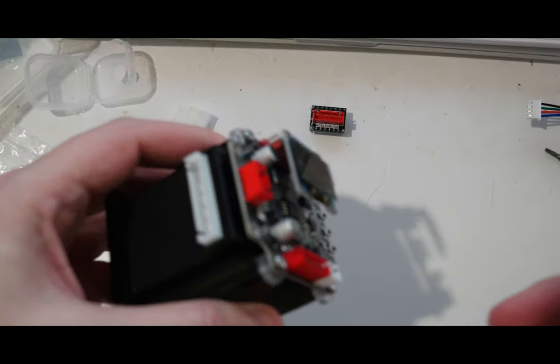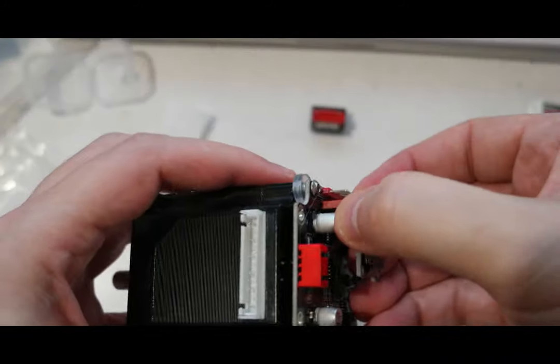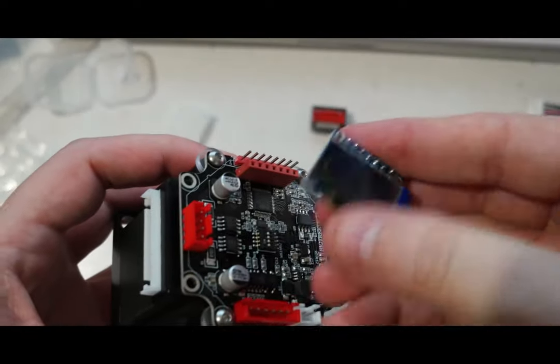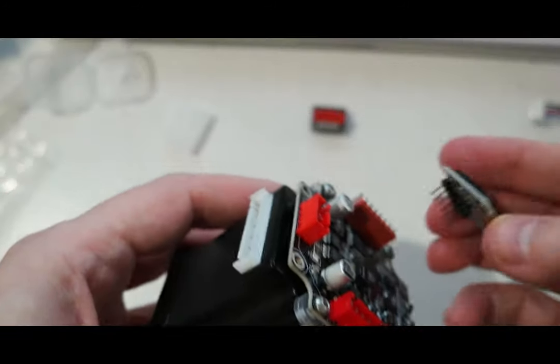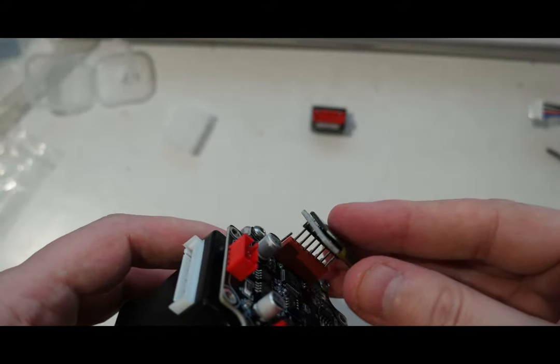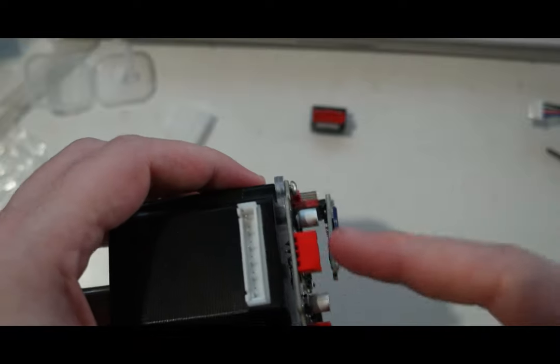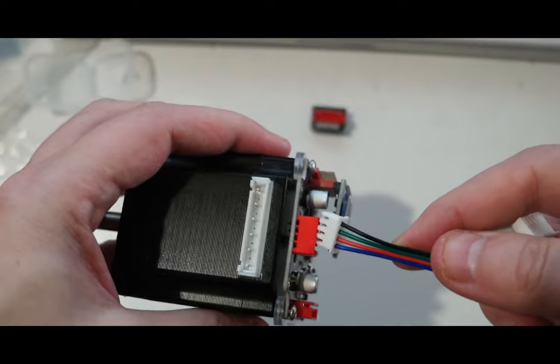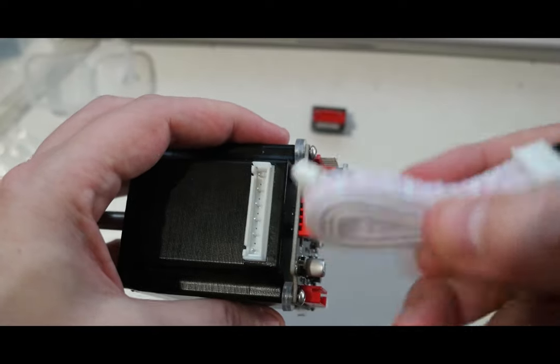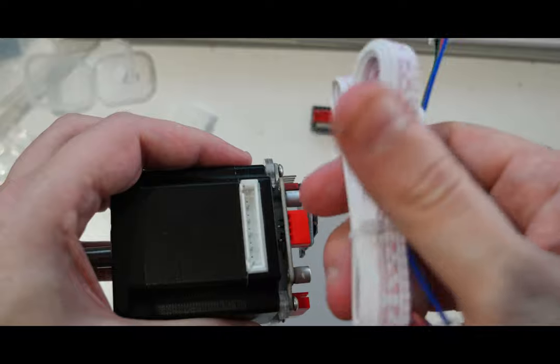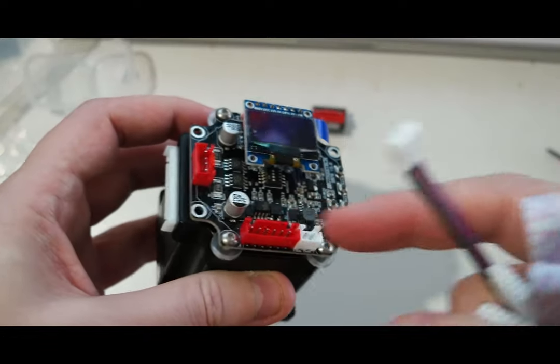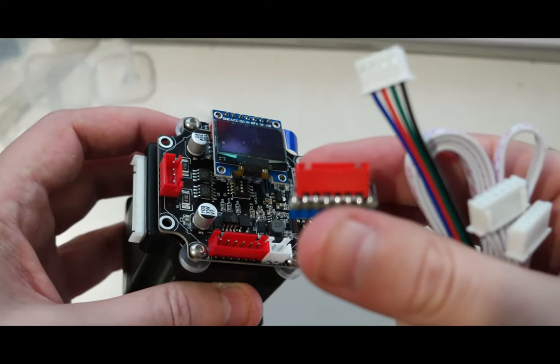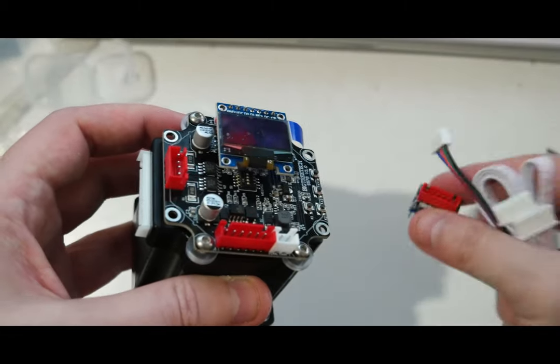So basically, you get the OLED. In this case it's a seven pin OLED. You put it here. Then cable, this cable here goes from this socket to this big socket. And the white cable goes from here to the driver adapter on the board, the main board. And that's it.